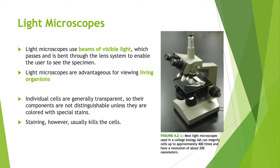Light microscopes — probably something you've used in high school or biology lab — use beams of light to help you magnify, resolve, and visualize whatever you're looking at. You can use light microscopes to view living organisms, but the trick is contrast. A lot of individual cells are transparent, so you have to stain them. But staining kills them, making it tricky to look at living organisms. There are however modifications to light microscopes that do allow you to see living organisms functioning normally.